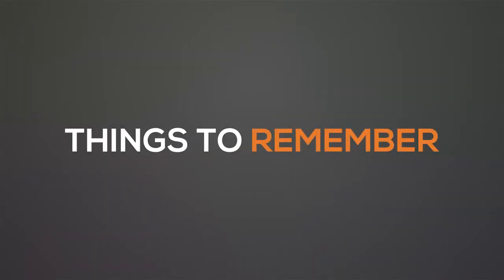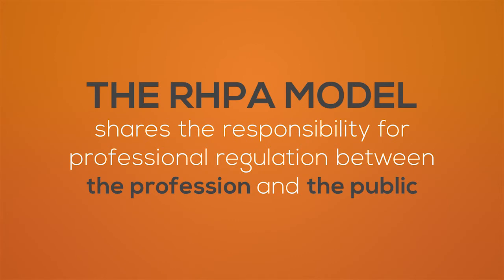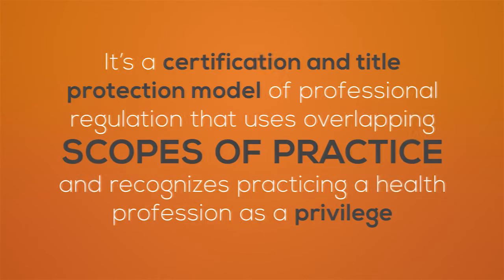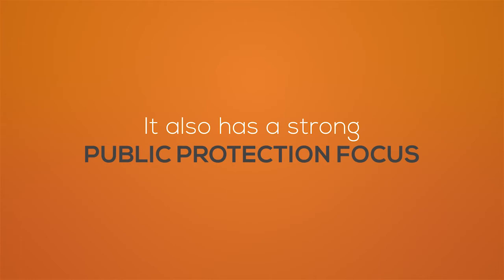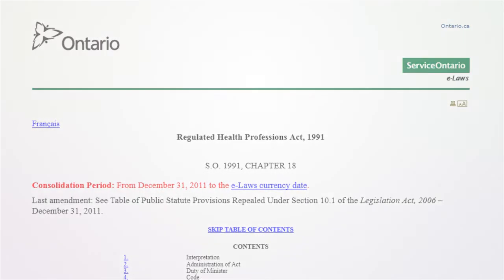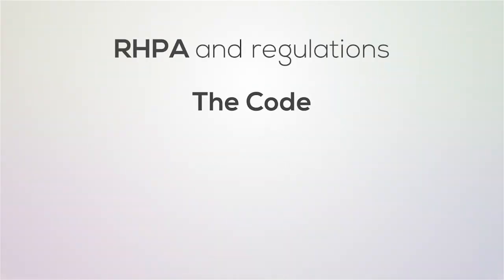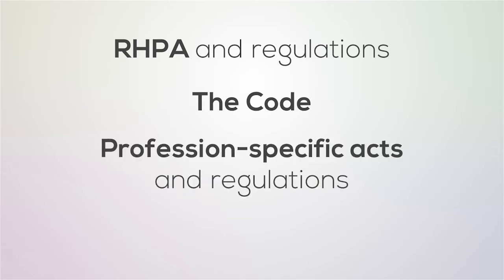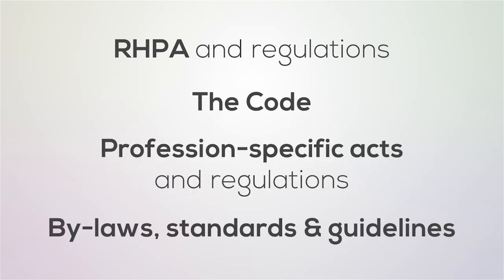This brings us to the end of understanding the Regulated Health Professions Act. Before we wrap up, I'd like to highlight some of the key things you should remember about the RHPA model. The RHPA model shares the responsibility for professional regulation between the profession and the public. It's a certification and title protection model of professional regulation that uses overlapping scopes of practice and recognizes practicing a health profession as a privilege. It also has a strong public protection focus. The RHPA model is made up of the RHPA and regulations, the Code — which is deemed to be a part of every profession-specific act — profession-specific acts, and regulations and bylaws, standards, and guidelines.